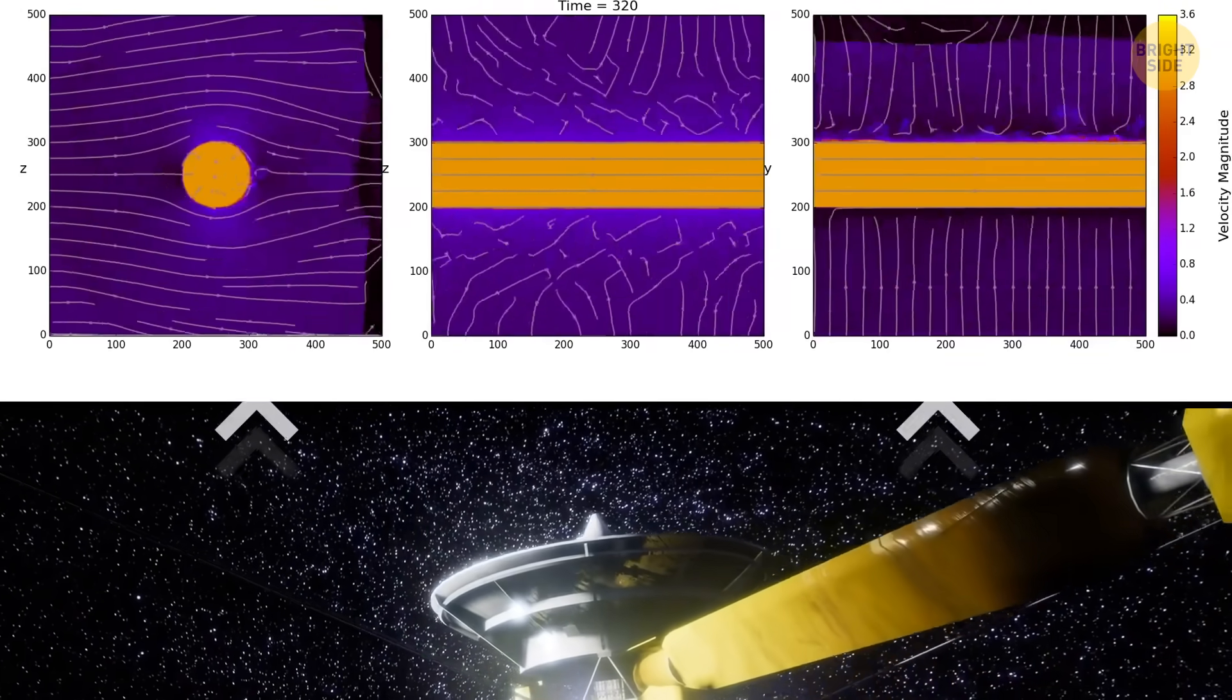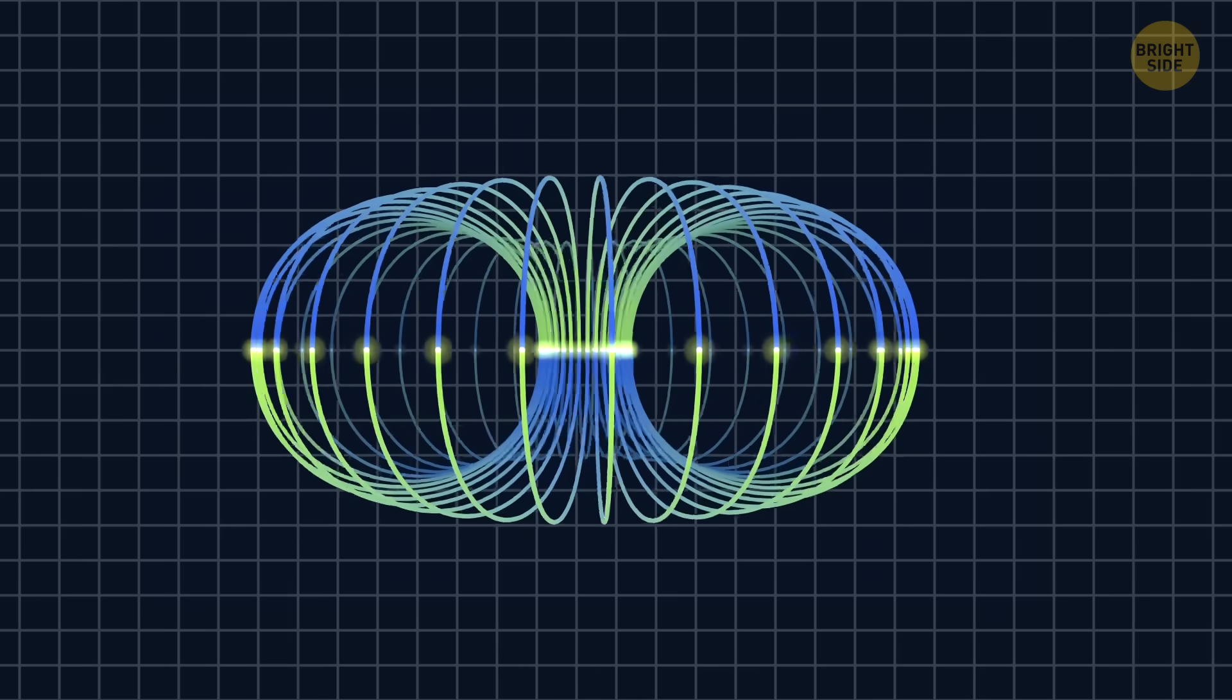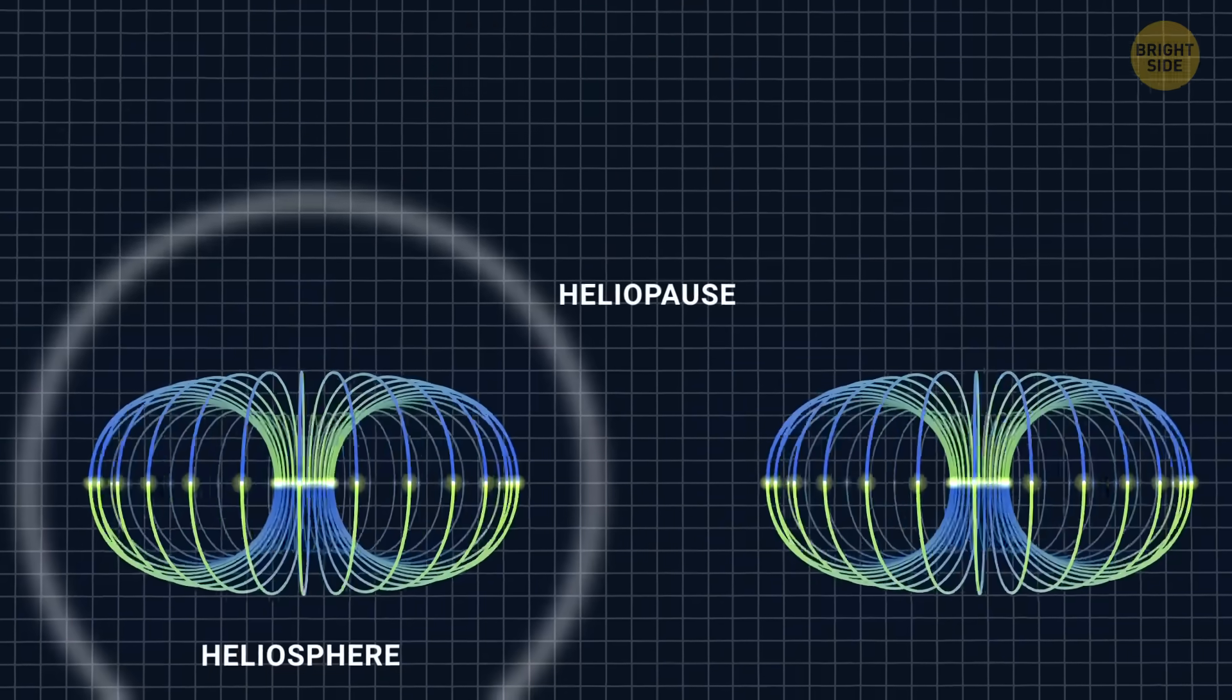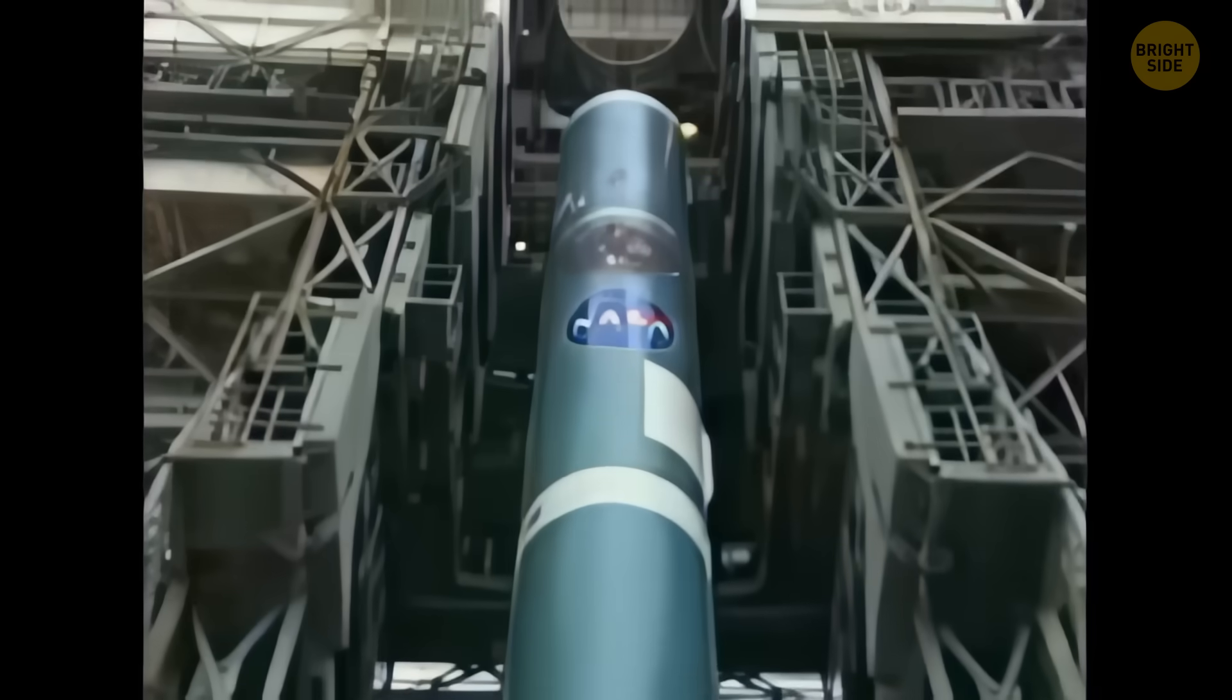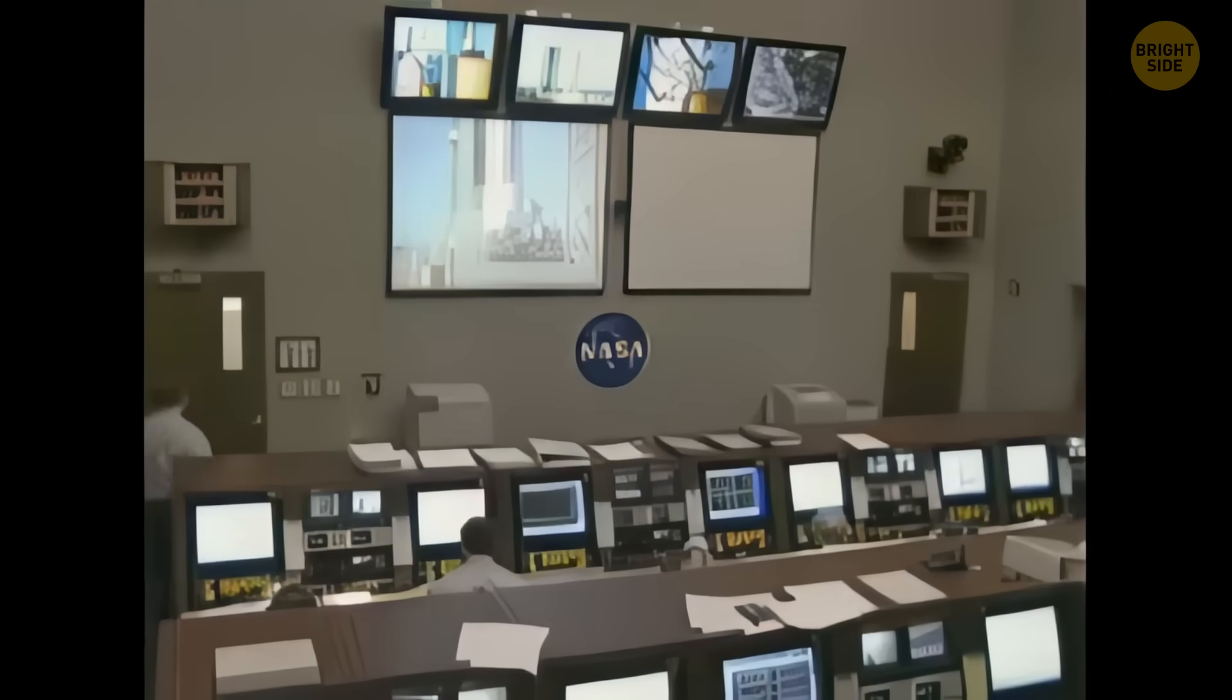For example, Voyager 2's magnetic field measurements confirmed a surprising result from Voyager 1. Just beyond the heliopause, the magnetic field lines are aligned with the magnetic field inside the heliosphere. Before Voyager 2, scientists only had one measurement from Voyager 1, so they could not be sure whether this alignment was real or just a coincidence. Voyager 2 confirmed that the alignment was real. The magnetic fields inside and just outside the heliopause apparently run in parallel. These discoveries give scientists important information about the structure and behavior of space beyond the solar system.